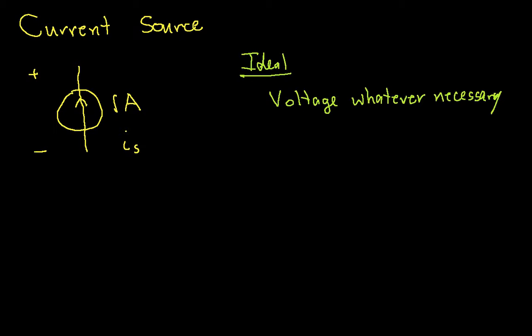So, if I, for example, were to hook up an ideal current source to a 1 watt load, it would make the voltage necessary to provide 1 watt of power. If I were to hook up a current source to a billion watt load, it would make the voltage, whatever is necessary, to provide a billion watts. Examples of real current sources in the real world are much less common than real voltage sources.